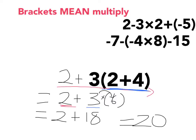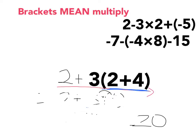Pretty straightforward. Brackets mean multiply — multiply what is directly in front of them.